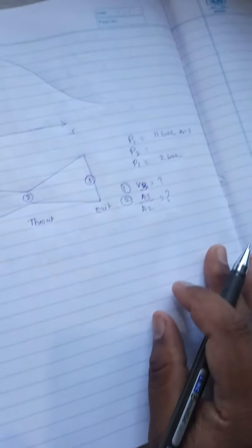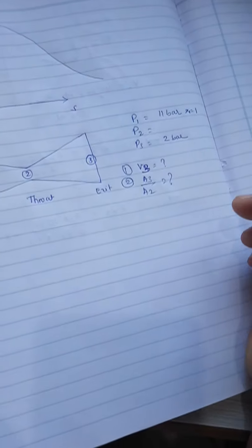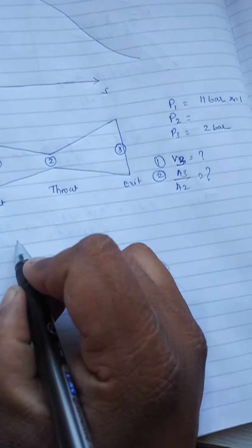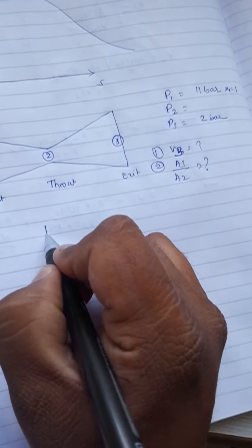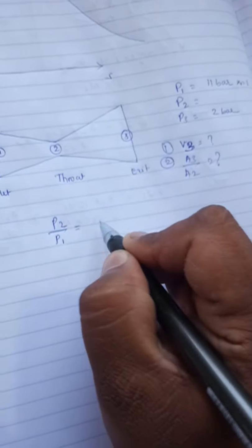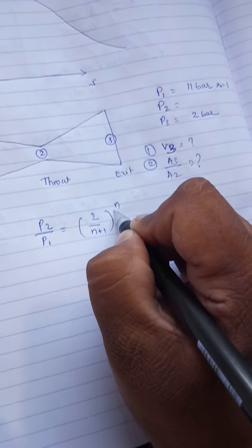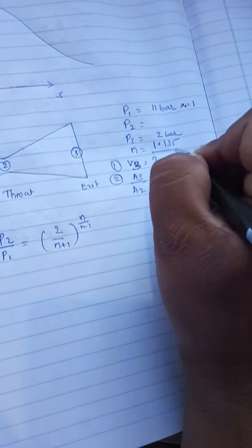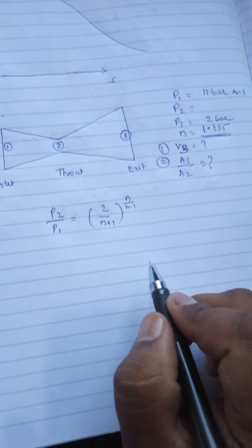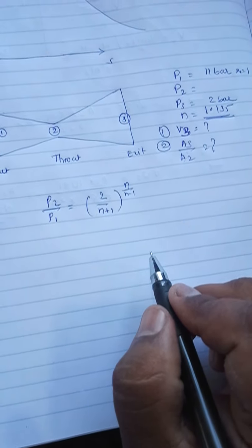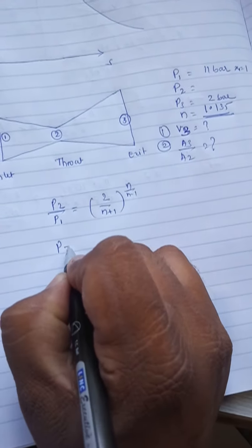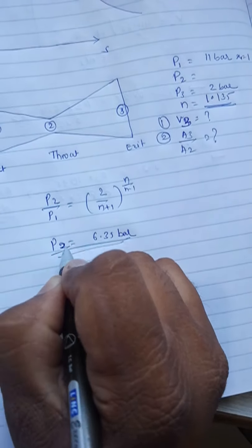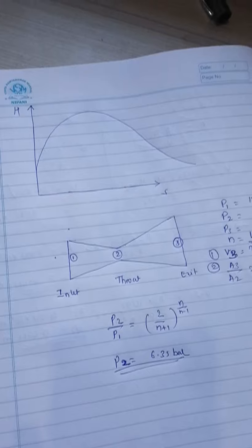So now we know one formula already. This is P1 he has given, P3 he has given. But I need to find out P2 because I need to calculate A2 value and other things. So P2 is equal to, you know the formula, critical pressure ratio formula: P2 by P1 is equal to 2 divided by n plus 1 raised to n divided by n minus 1. So n already given in the problem, it is 1.135. Use this only, don't use 1.4. Now if you calculate from this you will get P2 is equal to 6.35 bar.